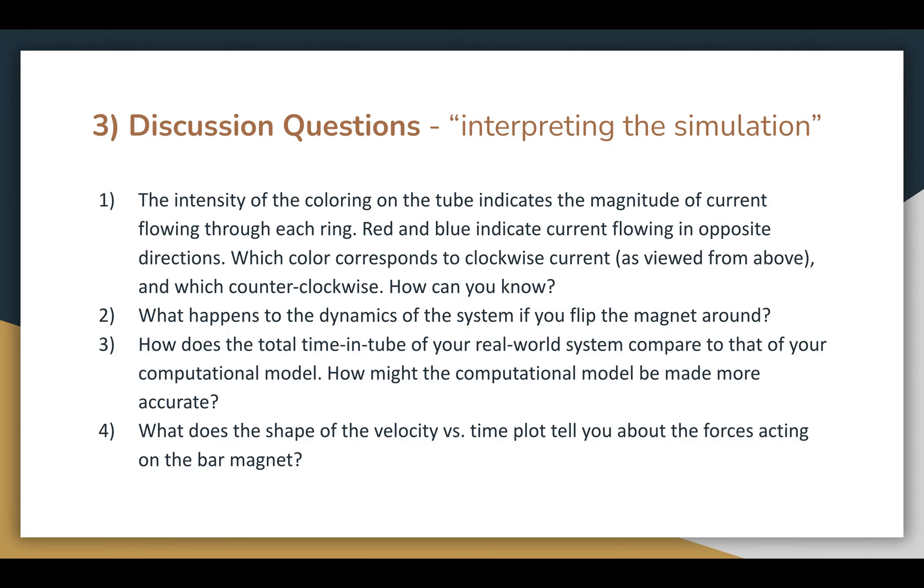How does the time calculation in the model compare to real-world results? And how can our model be made better? In my case, my model was fairly accurate, although with a slight difference in results. To make the model better, we could split the tube into more rings so as to obtain a more accurate result, and also account for any air resistance the magnet might encounter on its way down the tube.